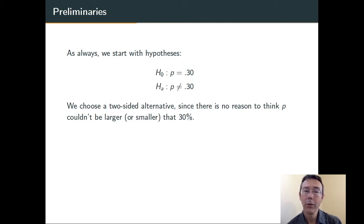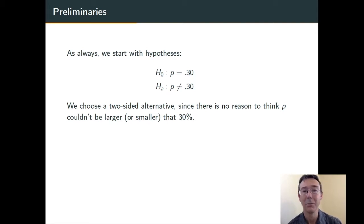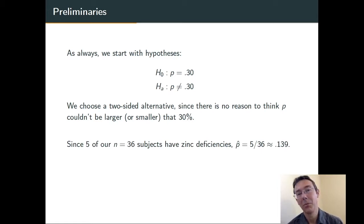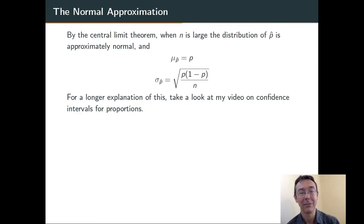As usual, the two-sided alternative is our default option. We only go for a one-sided alternative if we have a specific reason to do so. Our p-hat is going to be 5 out of 36, or 0.139 — obviously substantially less than 30%. But is that difference statistically significant?